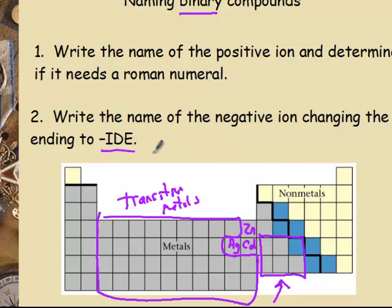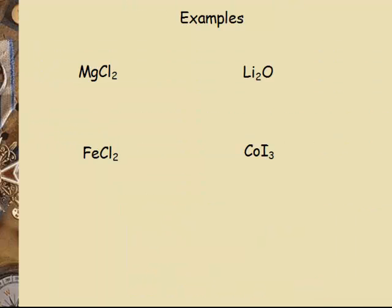Remember, we checked that anyway when we were going from the name to the formula — that's how we determined we had a binary substance. Now when we have the formula, we can look at it and see that it's binary because it's just two elements, and then name the substance. So here are our first four examples.